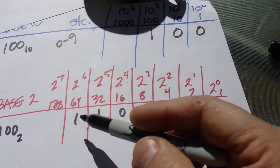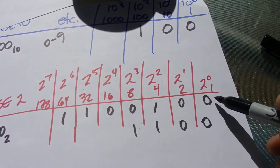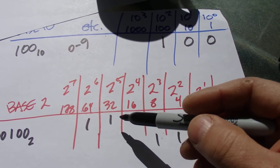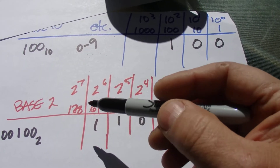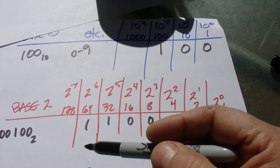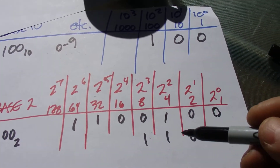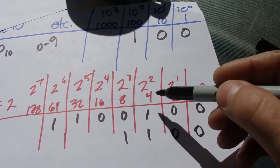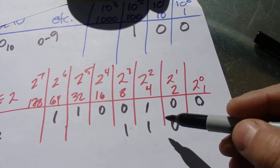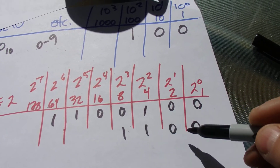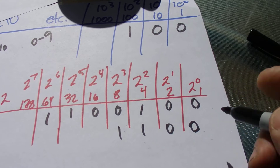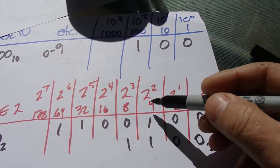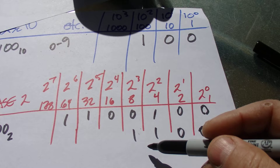And if you wanted to convert back — for instance, if you saw this and wanted to know what it is — you would just go 4 plus 32 plus 64, and you go, oh yeah, it's 100. Or if you wanted to know what 12 was, you could do it this way to create 12. Or if you saw 1100 in base 2, you'd be like, okay, that's a 4 plus an 8 — it's 12.